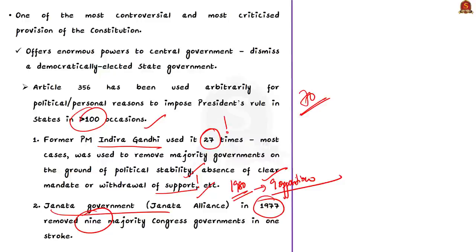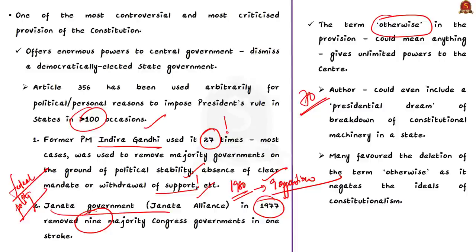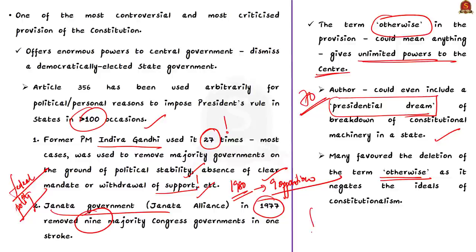This is incorrect in a federal polity where the central and state governments are both superior in their own spheres. The contentious provision is the term 'otherwise,' because it gives unlimited powers to the Centre — the author even jokingly says it could include a presidential dream. Many have favored deletion of the term 'otherwise' as it negates the ideals of federalism and constitutionalism. Because of all these reasons, Article 356 has been one of the most controversial and most criticized provisions of the Constitution.